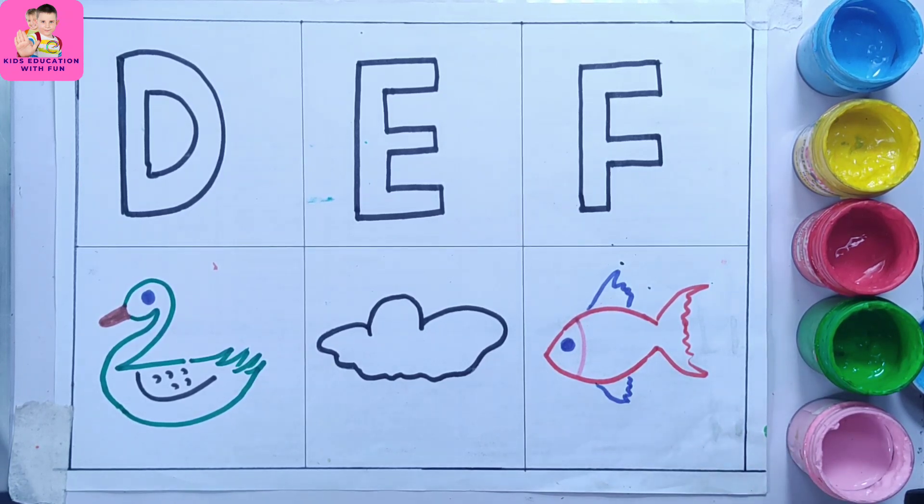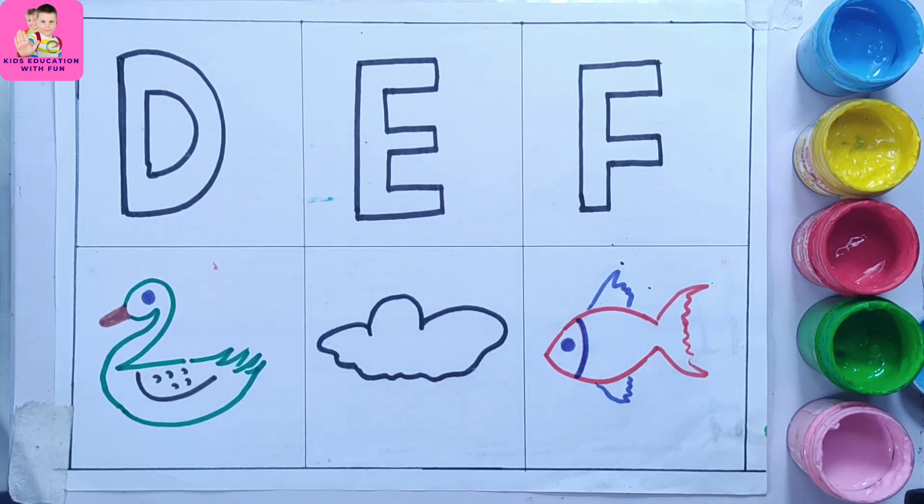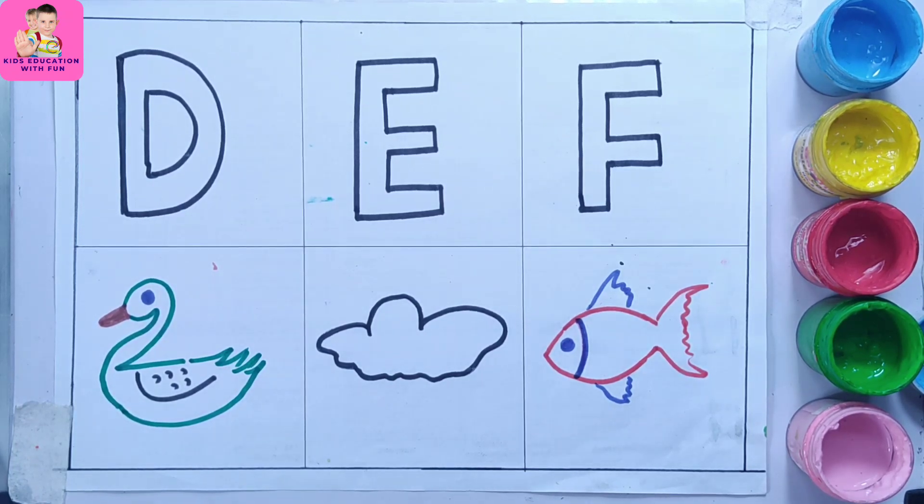So this is a fish. F is for fish. So this is a fish. F is for fish egg, so...